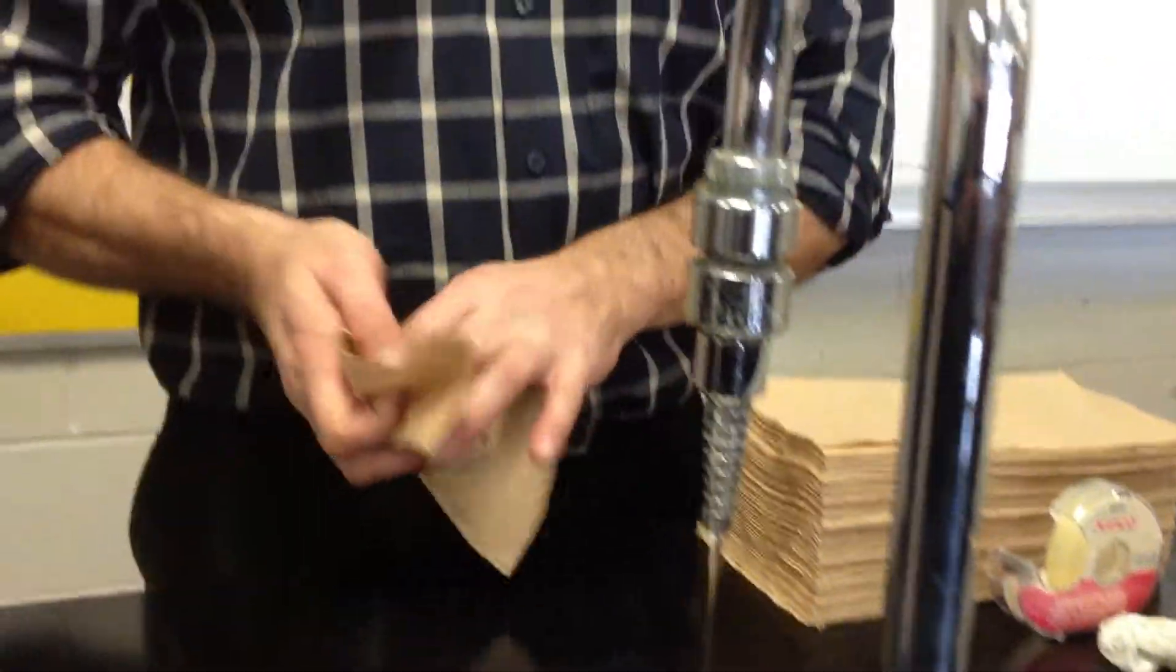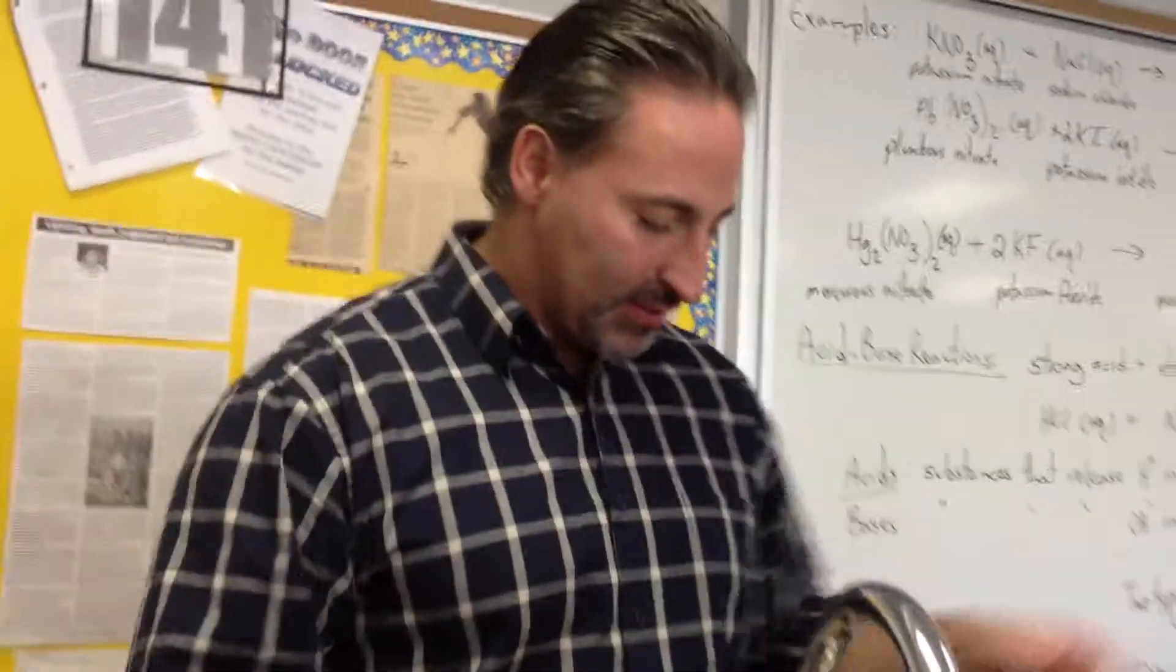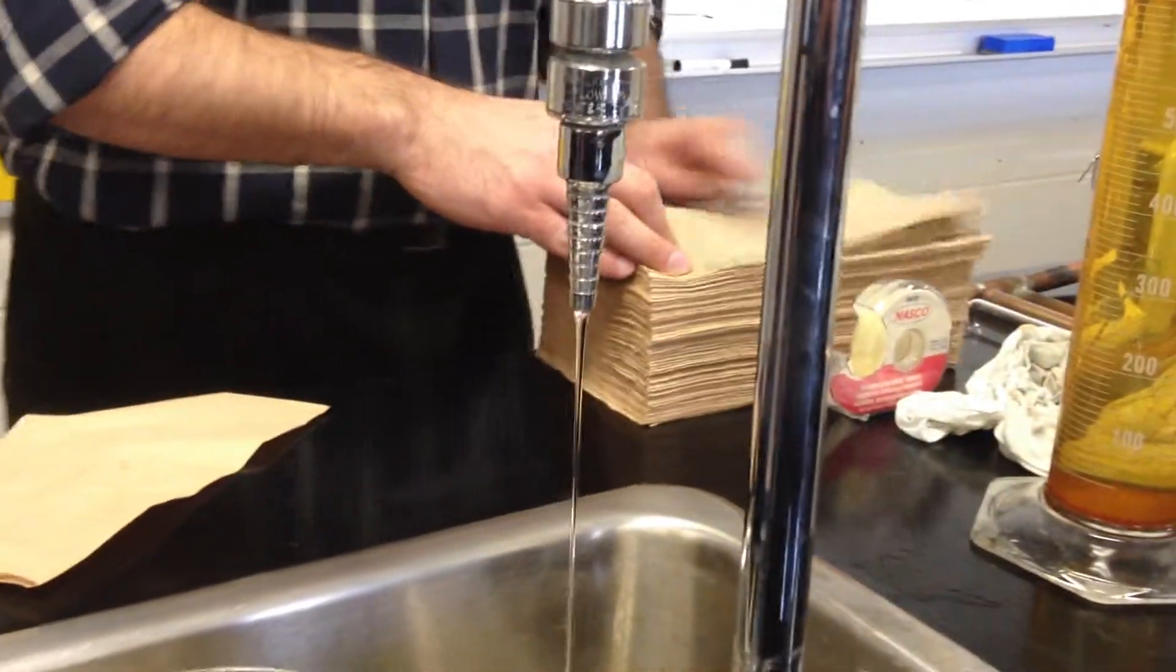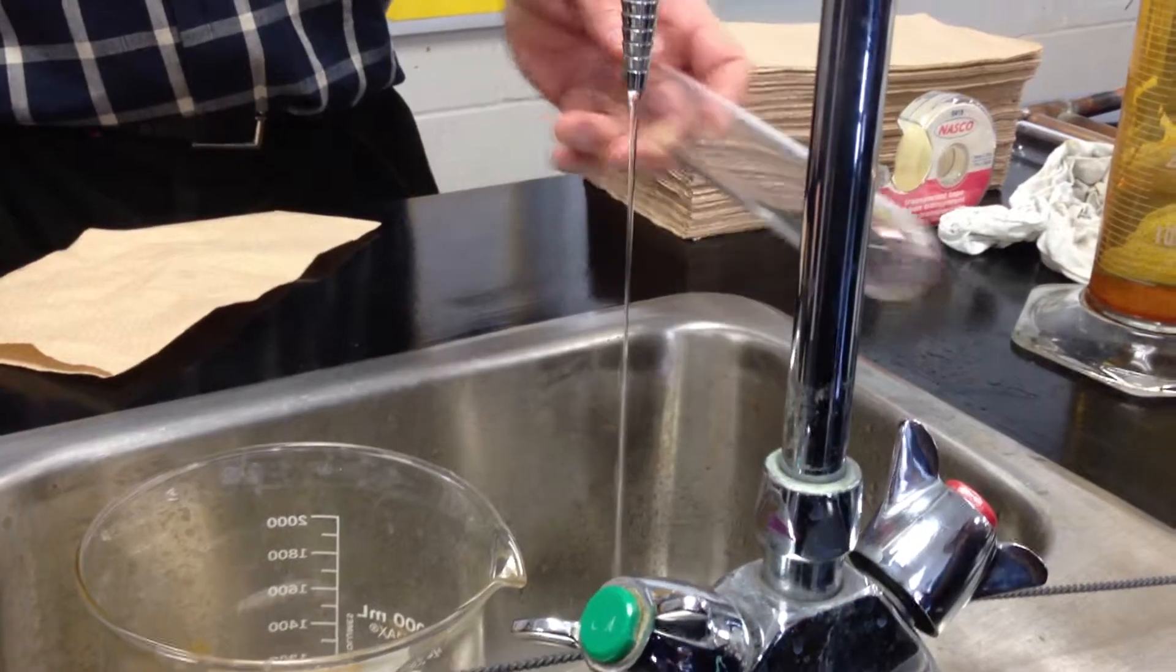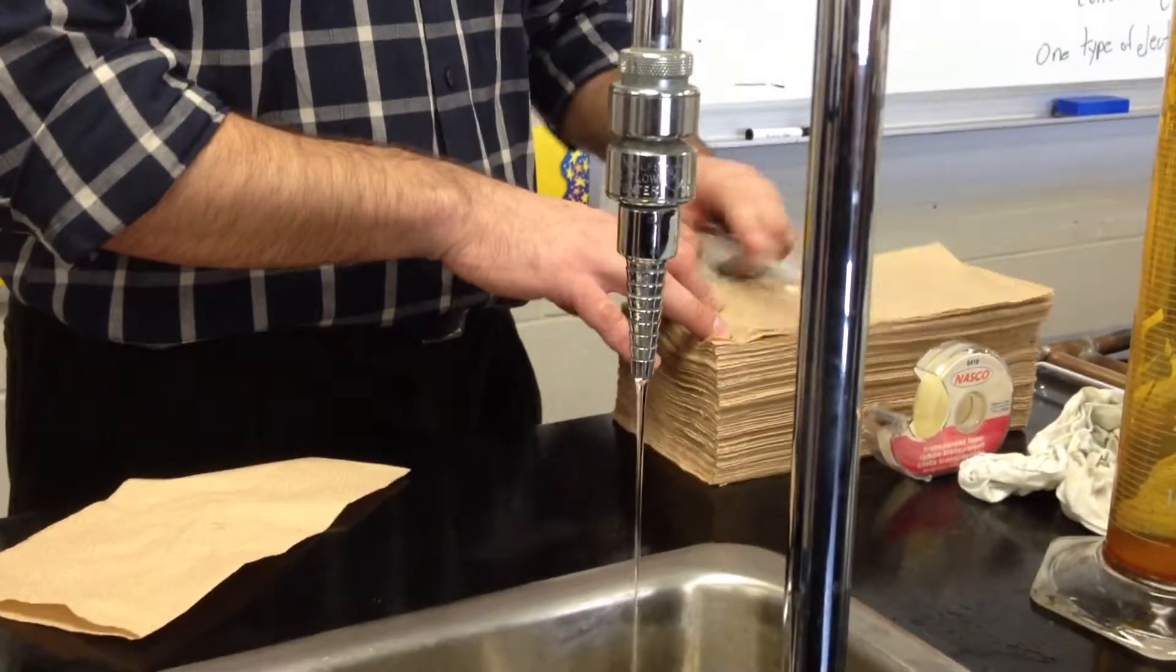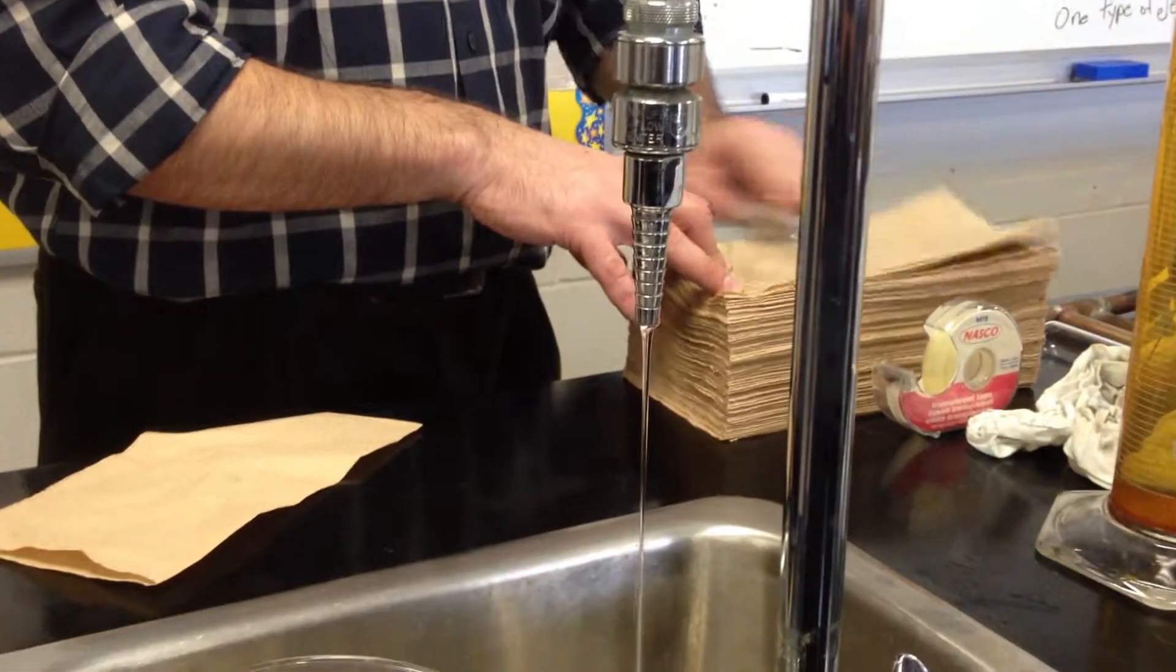There are other objects that can have... let's see if glass has any effect. I have a glass test tube. We'll rub it on the same paper towels and see if it has any effect. Nothing. Clearly the paper doesn't steal electrons from the glass or vice versa.